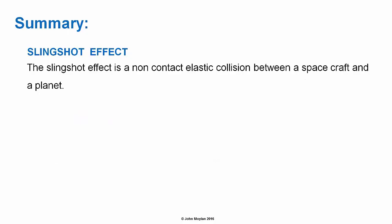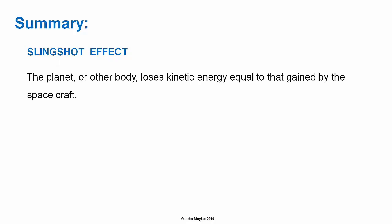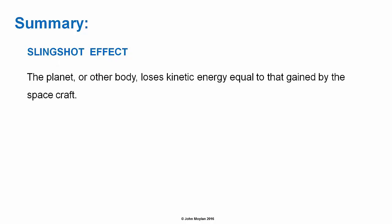Summary: The slingshot effect is a non-contact elastic collision between a spacecraft and a planet. Both momentum and kinetic energy are conserved. The slingshot effect results in a change in the velocity and/or direction of the spacecraft. The planet or other body loses kinetic energy equal to that gained by the spacecraft. The change in the velocity of the planet is insignificant as the mass of the planet is very much larger than that of the spacecraft.